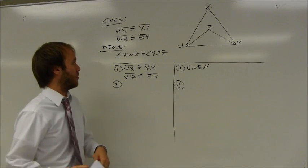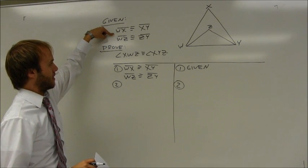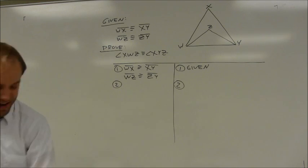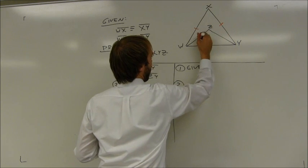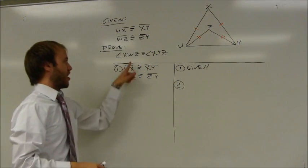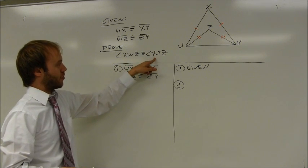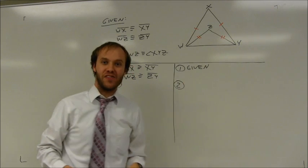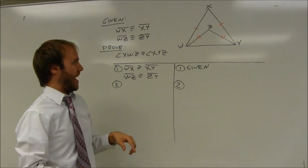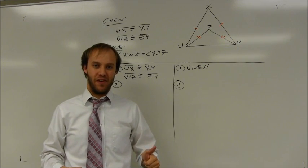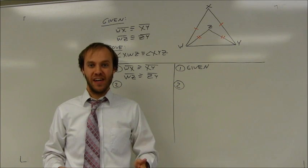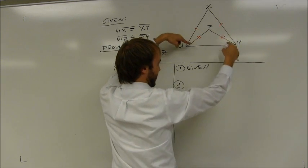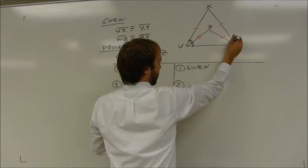The given information tells me that segment WX is congruent to XY, and that WZ is congruent to ZY. I'm going to mark both of those in my diagram. The proof asks me to show that angle XWZ is congruent to angle XYZ — that's this upper angle here and this upper angle on the other side. The key concept: if a triangle has two congruent sides, the angles opposite those sides are also congruent. That tells me this is an isosceles triangle and its base angles are going to be congruent.